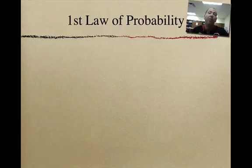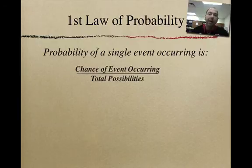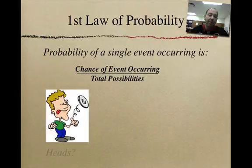So we're going to go now over the three laws of probability. And the first law is just a probability of any single event happening. And an easy way to look at that is this simple little fraction here, where we have the chance of the event occurring over the total number of possibilities. So, for example, here, let's say we have our good friend here who wants to flip a coin.